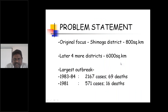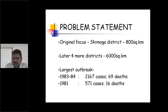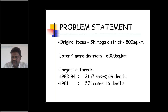The original focus is Shimoga district — almost 800 square kilometers. Later, another four districts were added, making the affected area almost 6,000 square kilometers. The largest outbreak occurred in 1983–84, with 2,167 cases and 69 deaths reported. In 1981, 571 cases were reported, with 16 deaths.